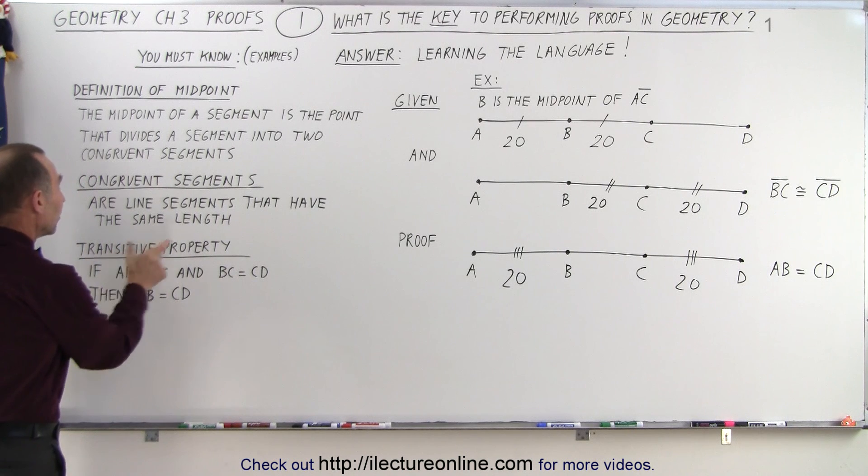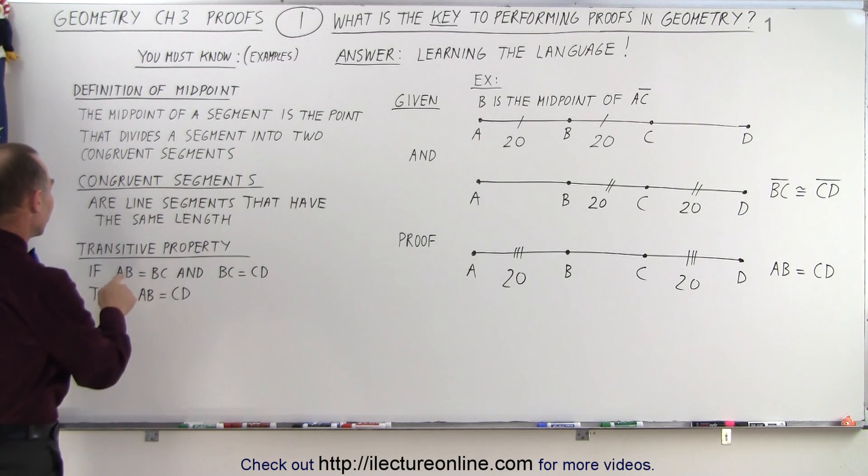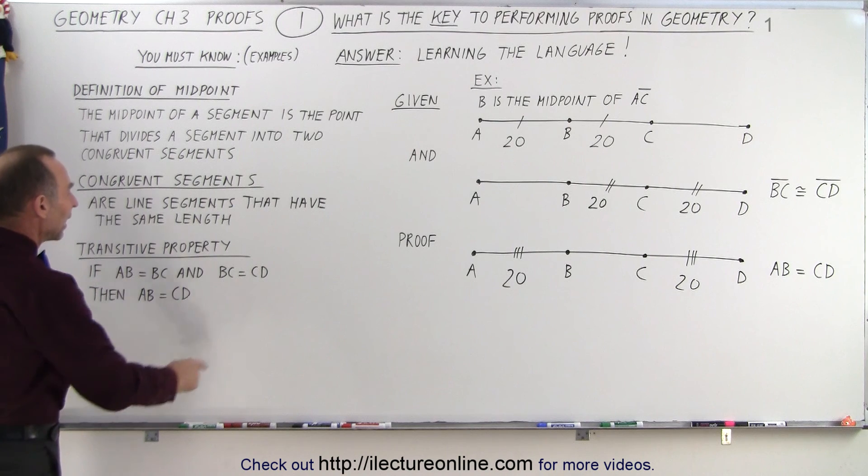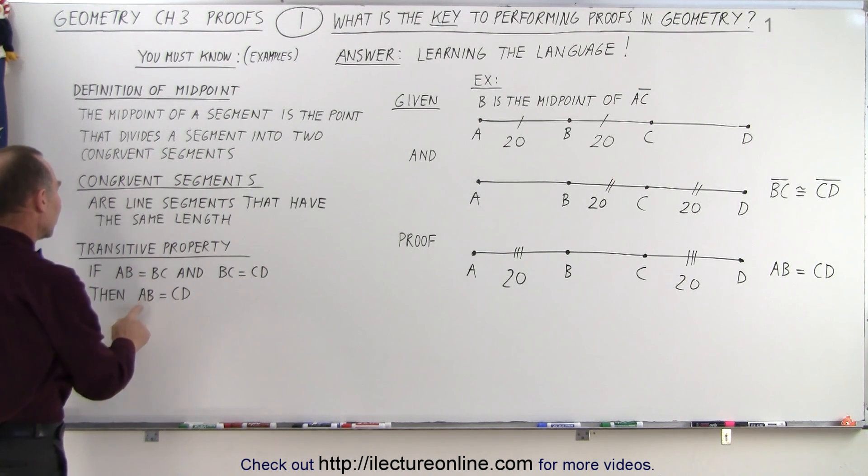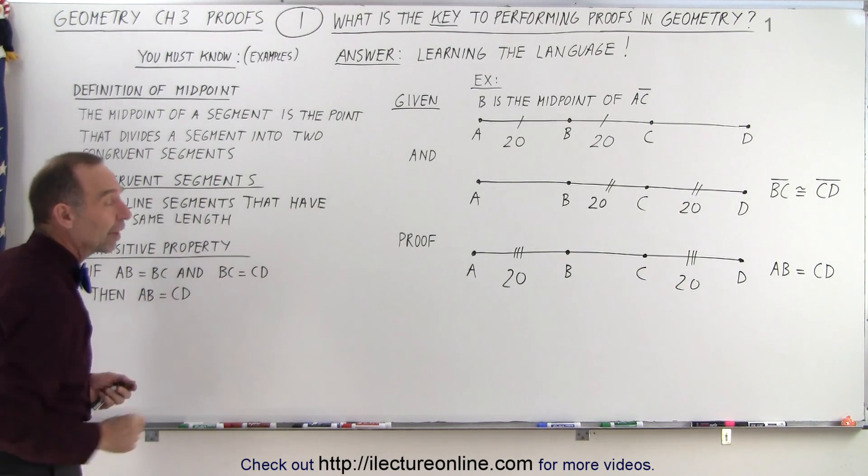And then you need to know the word that describes this particular relationship. It's called the transitive property that says that if the length of AB is equal to the length of BC, and the length of BC is equal to the length of CD, then you can say that the length of AB is equal to the length of CD, and that then proves what we tried to prove.